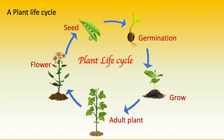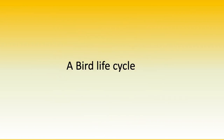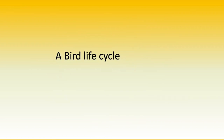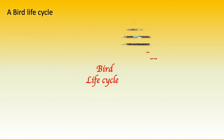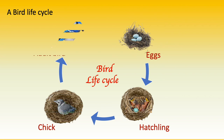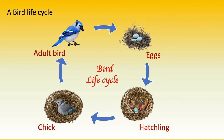A bird life cycle starts when a female bird lays eggs. When the offspring emerge from the eggs, they become hatchlings. After the hatchling develops, it becomes a chick. Chicks are similar to their parents — they are fed by their parents. Slowly their wings develop and they fly like their parents. They find food for themselves and become a fully grown bird, and lay eggs to continue the life cycle.